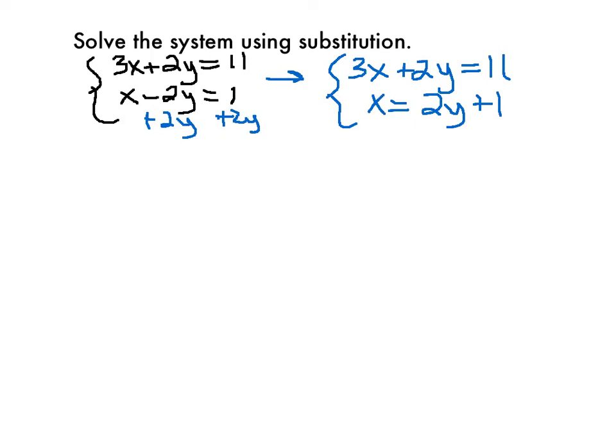I can now plug that into my top equation. I have x solved for. I know what x is equal to. X is equal to 2y plus 1. So I'm going to be able to take 2y plus 1 and substitute that in for x because that's what x is equal to. In my first equation, I'm going to have 3, but instead of x, x equals 2y plus 1, and the remaining part of the equation, 2y equals 11. So I substituted 2y plus 1 in for x. But I couldn't do this unless I solved for x first in that second equation.